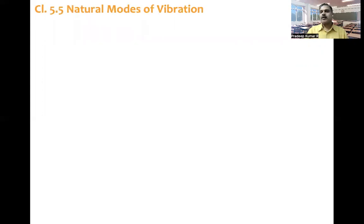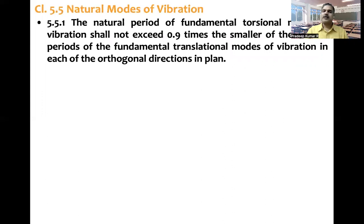Then let's come to the clause. So what clause says is on natural modes of vibration. So let's look at this carefully word by word. The natural period of fundamental torsional mode of vibration shall not exceed 0.9 times the smaller of the natural periods of the fundamental translational modes of vibration in each of the orthogonal directions in plan.